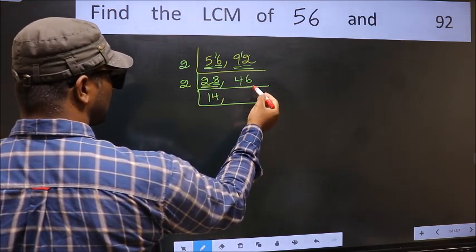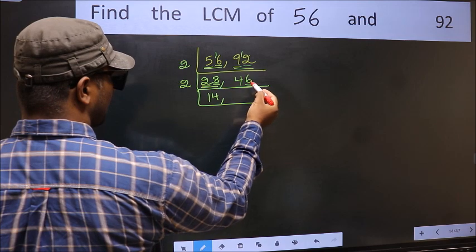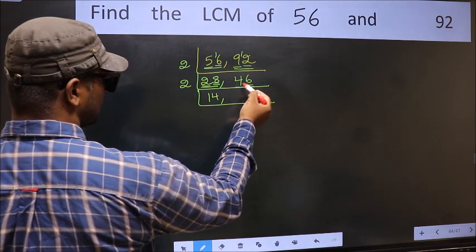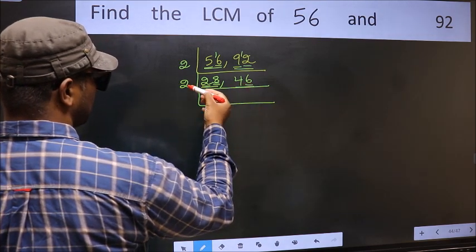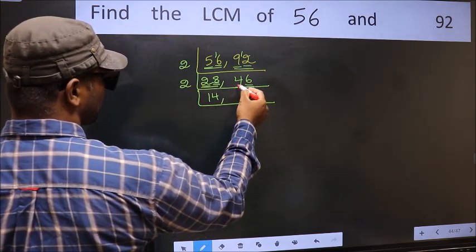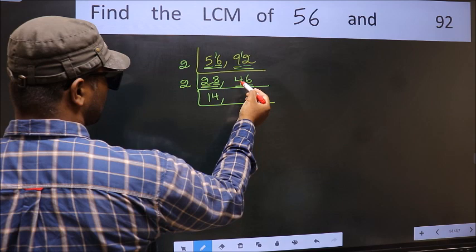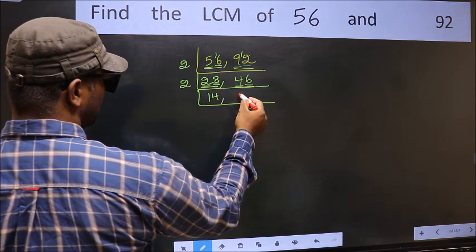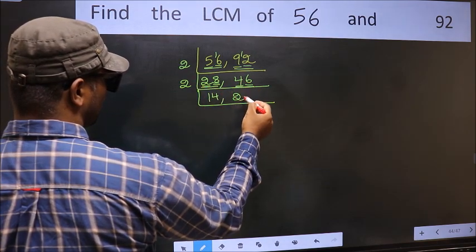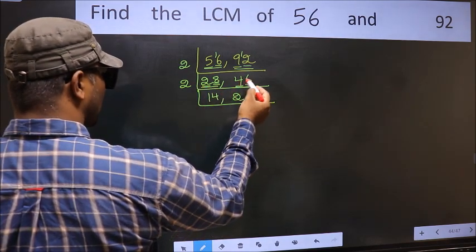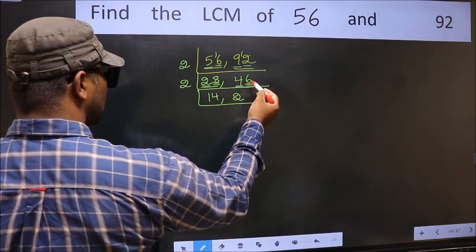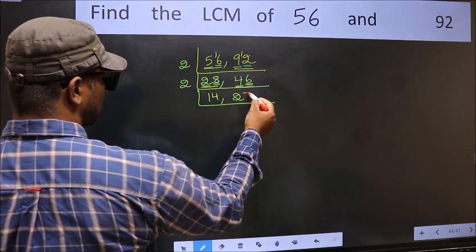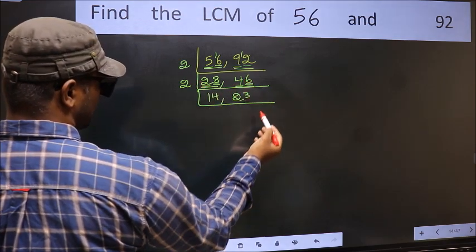The other number is 46. Last digit 6 — it's divisible by 2. First digit 4: when do we get 4 in the 2 table? 2, 2's — 4. The other digit 6: when do we get 6 in the 2 table? 2, 3's — 6. So 46÷2=23.